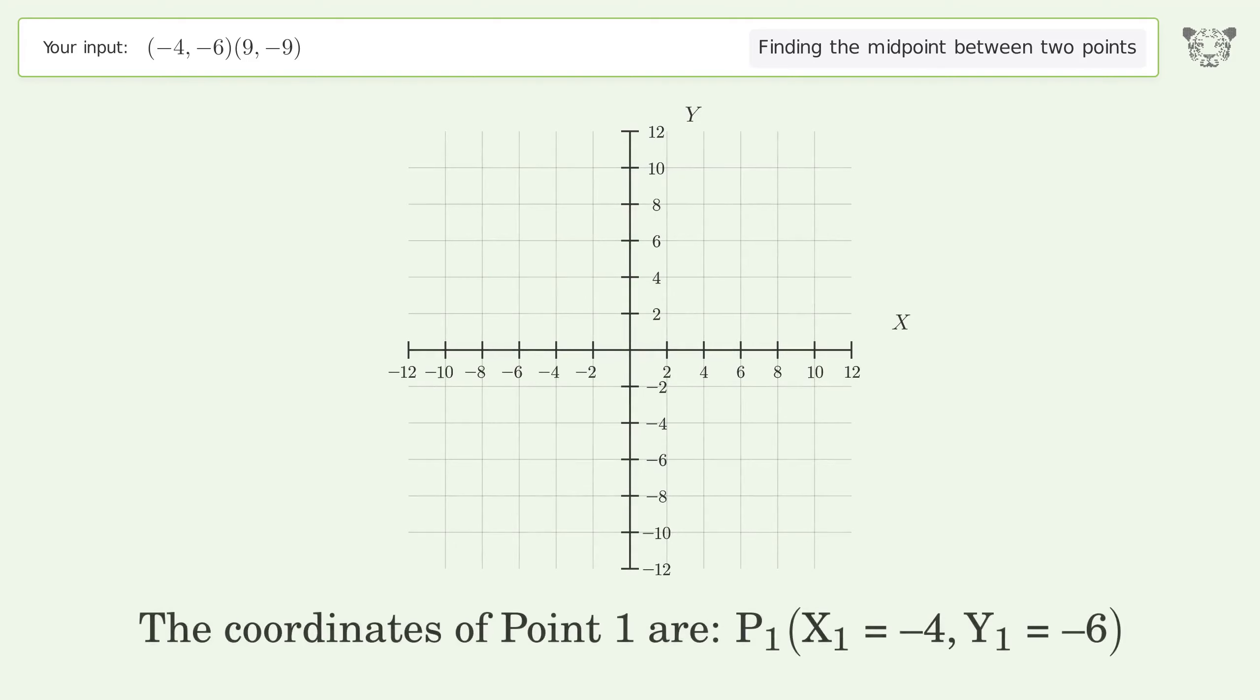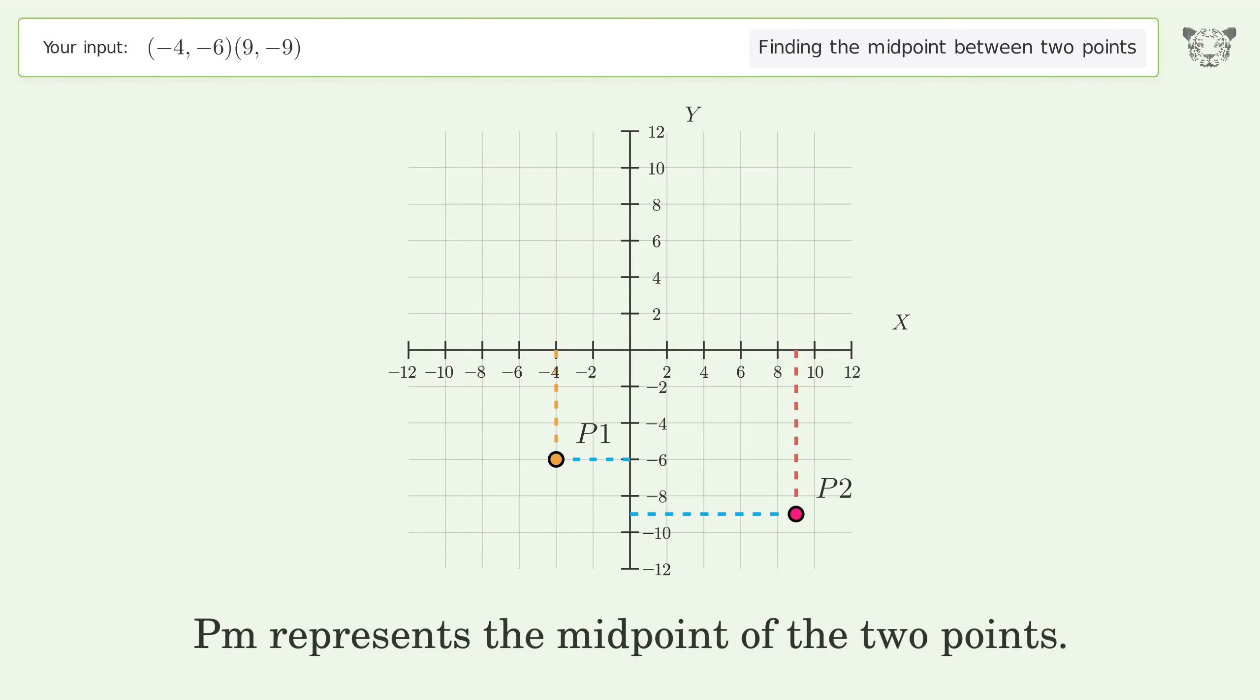The coordinates of point 1 are x1 = -4, y1 = -6. The coordinates of point 2 are x2 = 9, y2 = -9. Pm represents the midpoint of the two points.